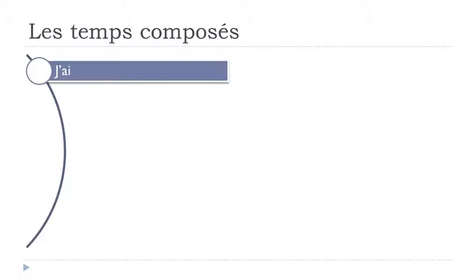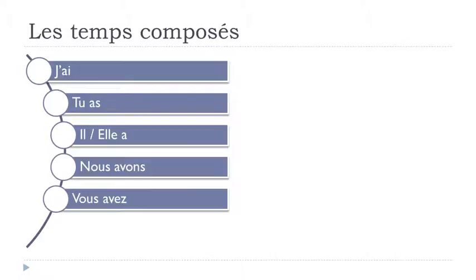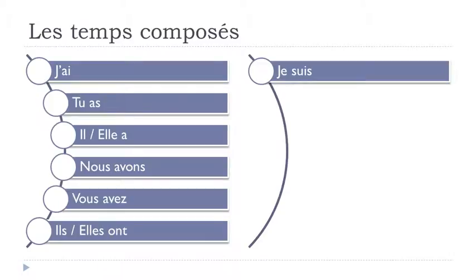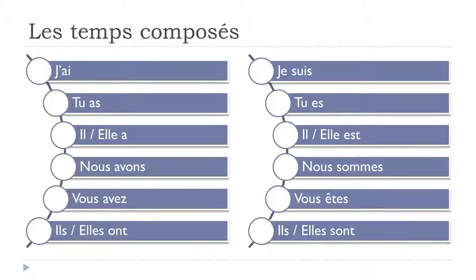Let's review avoir at the present tense: j'ai, tu as, il a, elle a, nous avons, vous avez, ils ont, elles ont. And être at the present tense: je suis, tu es, il est, elle est, nous sommes, vous êtes, ils sont, elles sont.